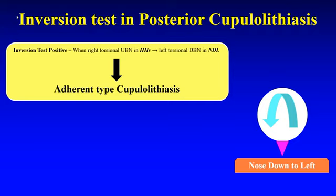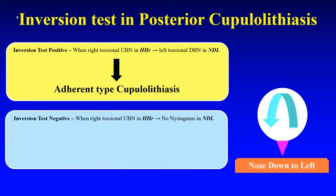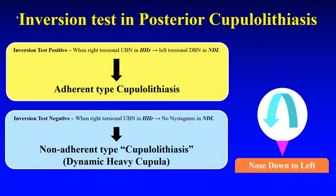This is in fact an acid test for this type of cupulolithiasis, as per Professor John Appley. A negative inversion test means when the right torsional upbeating nystagmus in the right half-Alpike position disappears on nose-down to the left. This is suggestive of non-adherent type of cupulolithiasis — in inverted commas — because this is in fact a dynamic heavy cupula caused by particles of otoconia falling on the cupula in short arm semicircular canalolithiasis.